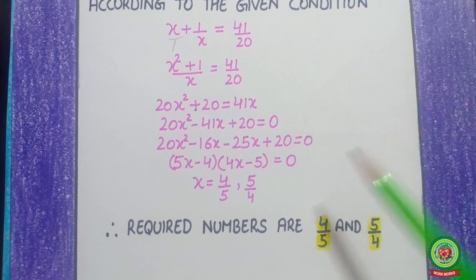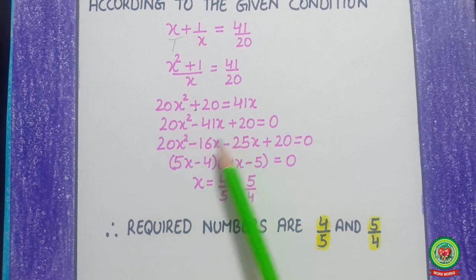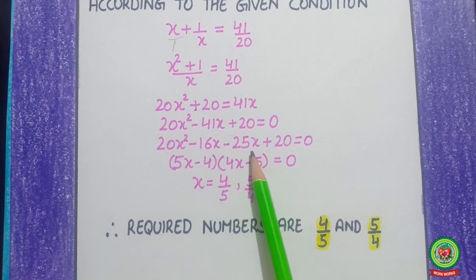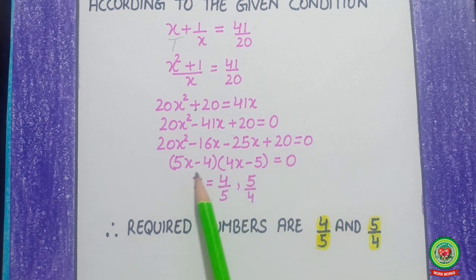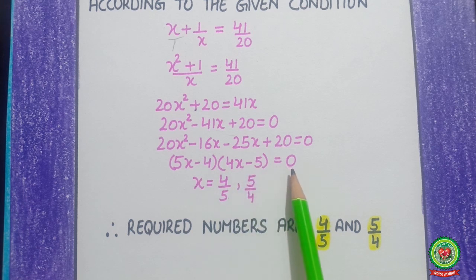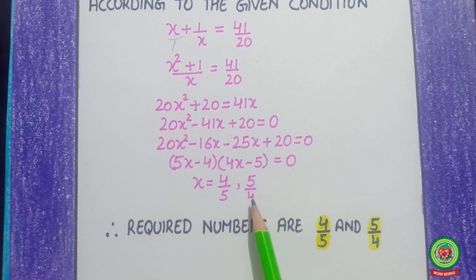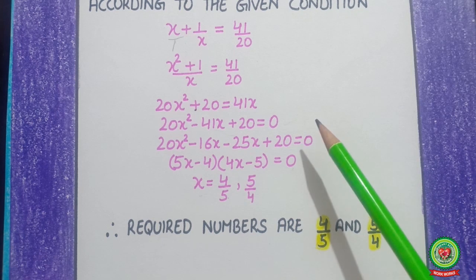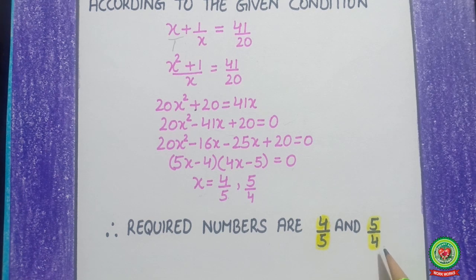From here, split the middle term. The equation becomes 20x squared minus 16x minus 25x plus 20 equals 0. Factoring gives (5x minus 4)(4x minus 5) equals 0. So, the value of x is 4/5 and 5/4. You can also solve this by discriminant or completing the square method. Therefore, our required numbers are 4/5 and 5/4. This is the second example related to word problems.